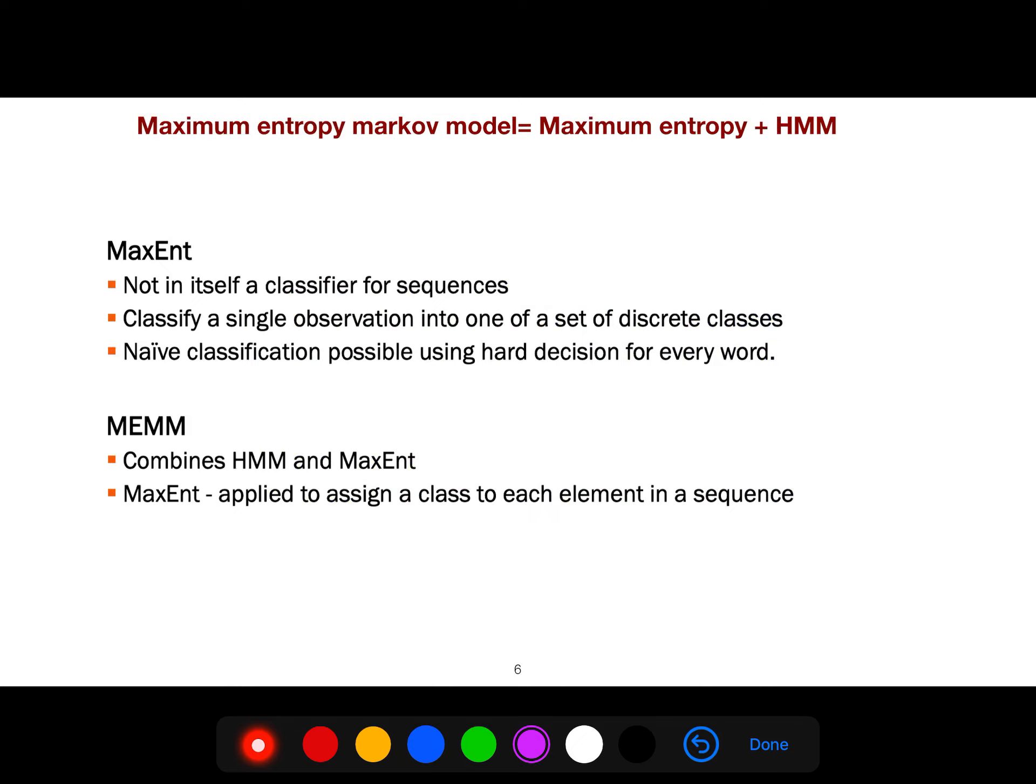So if we combine maximum entropy with the idea of HMM, we can create maximum entropy Markov model. So it's not itself a classifier for sequences, but it classifies single observation into one of discrete classes. And naive classification possible using hard decision. So I'm not talking about HMM in this slide. I just say that MEMM combines HMM and maximum entropy.